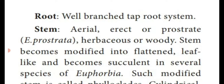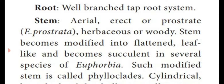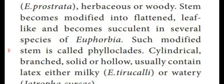In this plant, the stem is modified into flattened, leaf-like, succulent structures — that means storing water — in several species of Euphorbia. Such modified stems are called phylloclades. This is an important exam question: What are phylloclades? Answer: Stems modified into flattened, leaf-like, succulent structures in several species of Euphorbia are known as phylloclades.